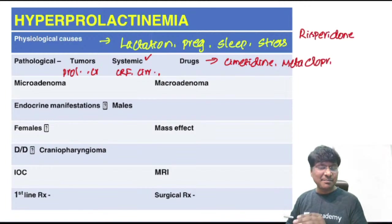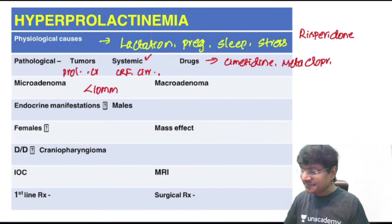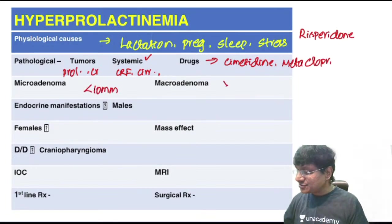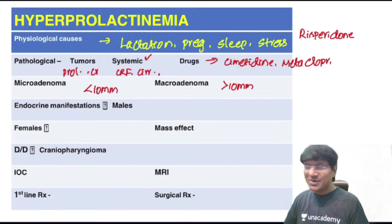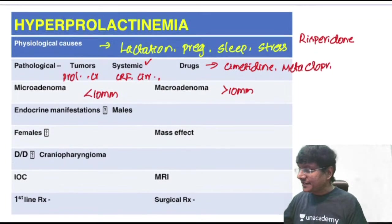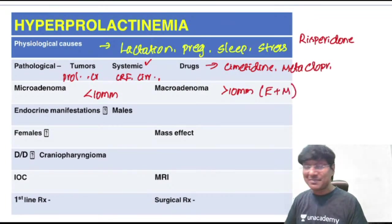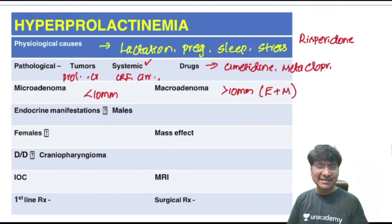Prolactinoma has two types based on size: microadenoma (less than 10 mm) has only endocrine manifestations, while macroadenoma (more than 10 mm) has endocrine manifestations plus mass effect.